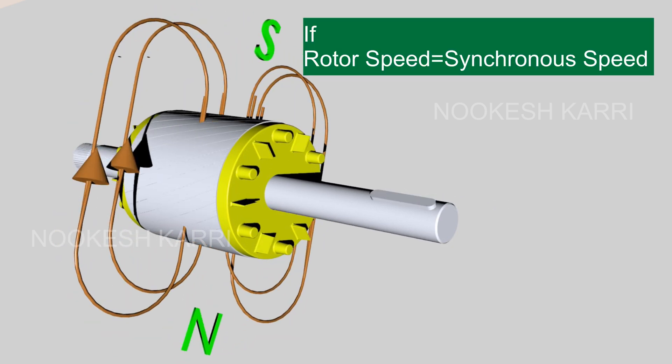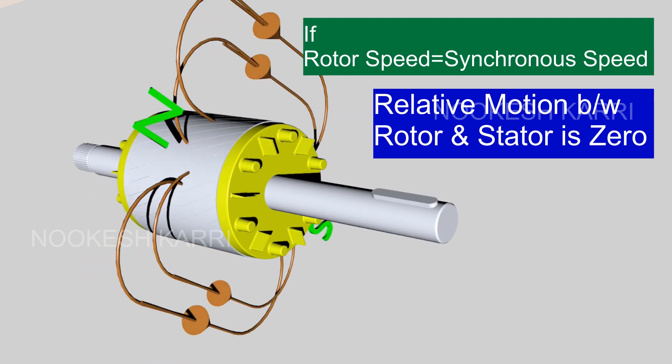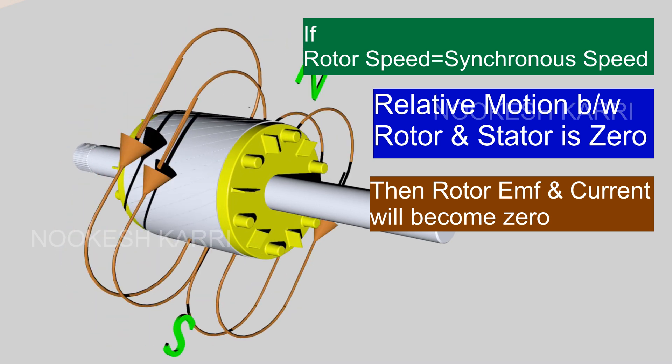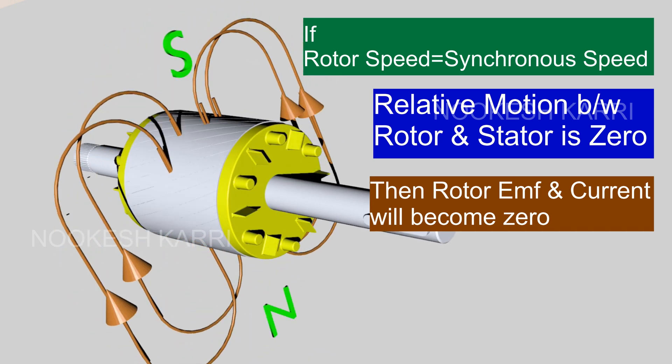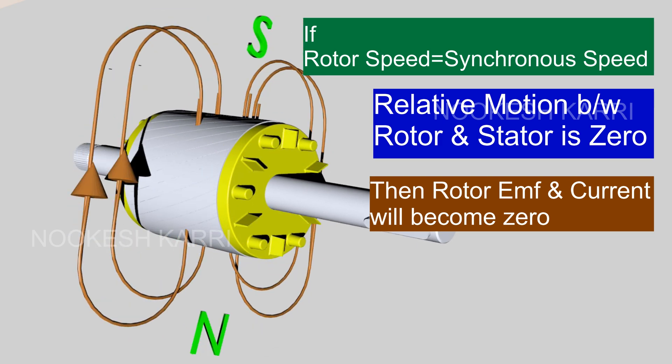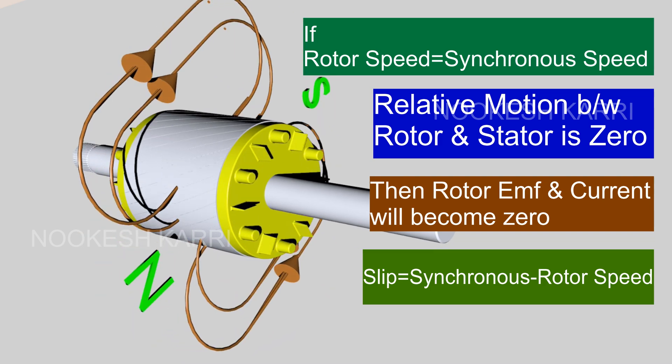If the rotor is rotating at synchronous speed, the relative motion between the stator and rotor is zero. So no EMF is induced in the rotor, and no current will flow through the rotor conductors. Therefore, no torque will be generated. As a result, the rotor cannot rotate at synchronous speed. The difference between the stator speed and rotor speed is known as slip.